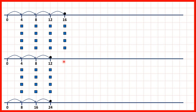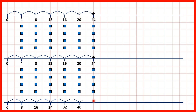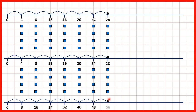4 times 4 is 16, and if we double 16, we get 32. 5 times 4 is 20, and double 20 is 40, so that's why 5 times 8 is 40. 6 times 4 is 24, and 6 times 8 is 48. 7 times 4 is 28, and 7 times 8 is 56. So 28 is half of 56, or double 28 is 56.